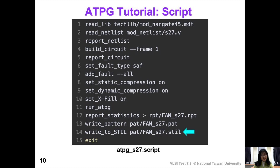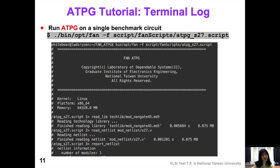After that, the pattern set should be generated and we store the results. Line 12 outputs the statistics report to an RPT file — for example, FAN_S27.rpt under the RPT folder. Lines 13 and 14 both output the pattern set to a file but in different formats. Note that line 14 is optional, since TetraMax only supports that format. To execute the script, simply type this command, which has three arguments: the FAN binary, the -f flag so all commands in the script are executed line by line, and the script file path.